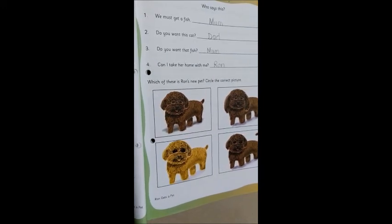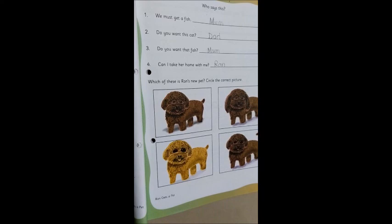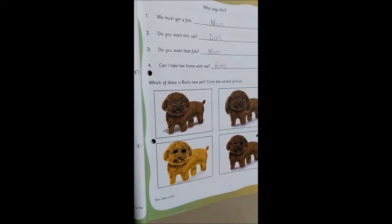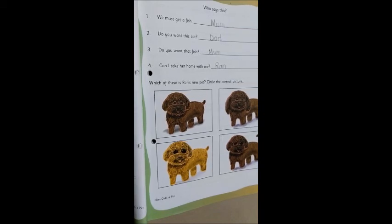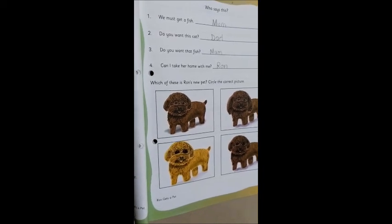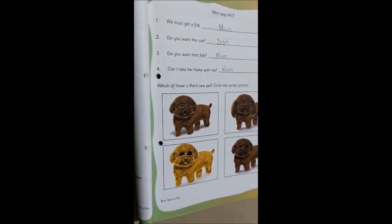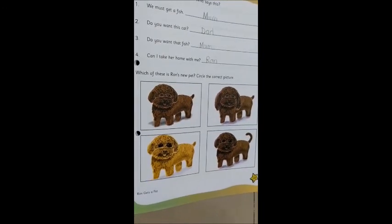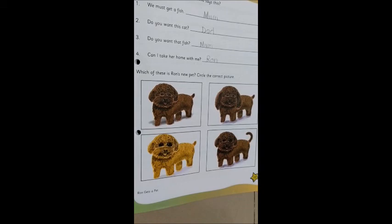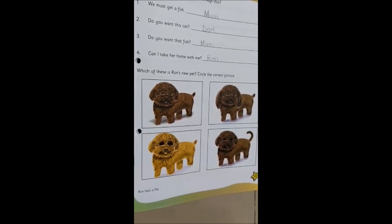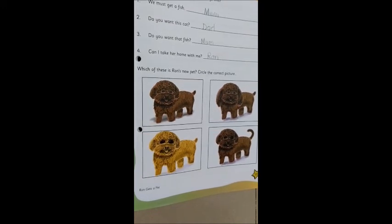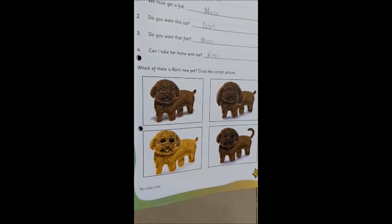Now, looking at these pictures. Moving on to the next part. All the dogs. Let's see what we have to do with them. Which of these is Ron's new pet? Circle the correct picture. So, now we know one thing. Right. So, can you see there? These four different dogs. So, which one was Ron's pet? Now, if you see, Ron's pet was which color? Can you all tell me? Yes. He was brown. So, one point we know. Ron's dog was brown.